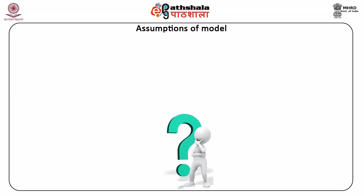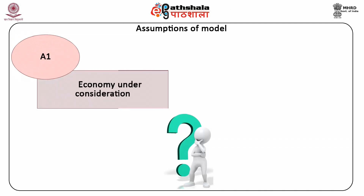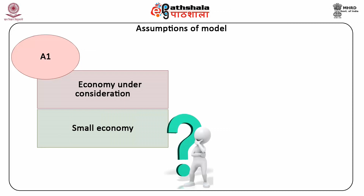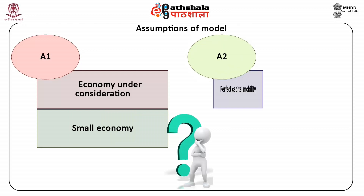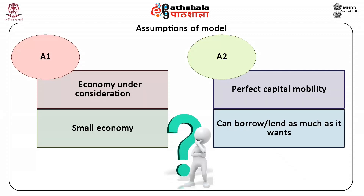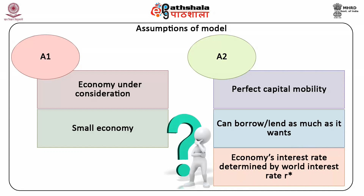Moving on to the assumptions of the model: 1. The economy under consideration is a small open economy. 2. There is perfect capital mobility in this small economy. That is, the economy can borrow or lend as much as it wants in the world financial market. 3. The economy's interest rate is determined by the world interest rate, i.e., R star.